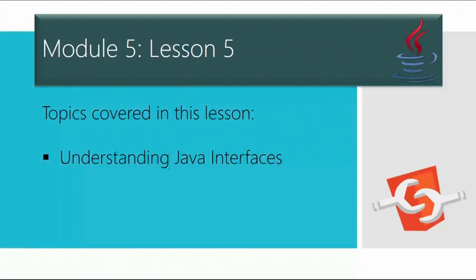An interface can have methods and variables just like a class, but the methods declared in the interface are by default abstract, which means only a method signature and no body. That's the first basic difference between Java interfaces and a class. The second aspect is that variables declared in an interface are public, static, and final by default, and we'll take a look at each of these points in detail.